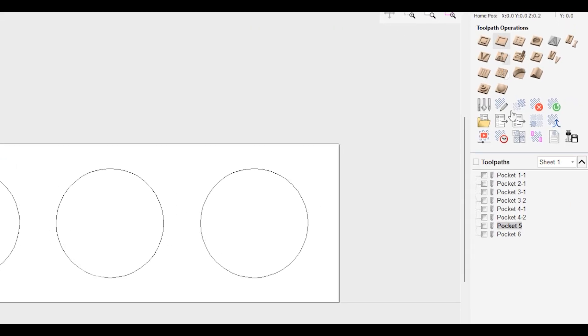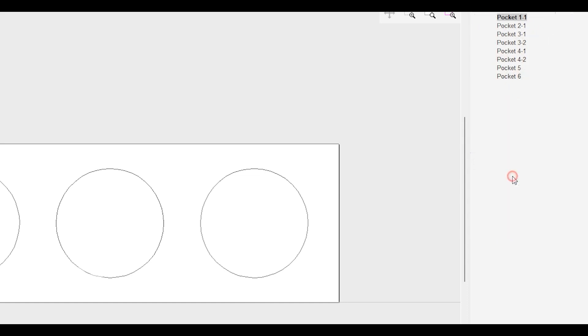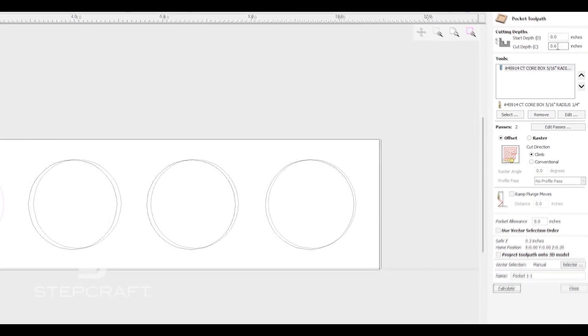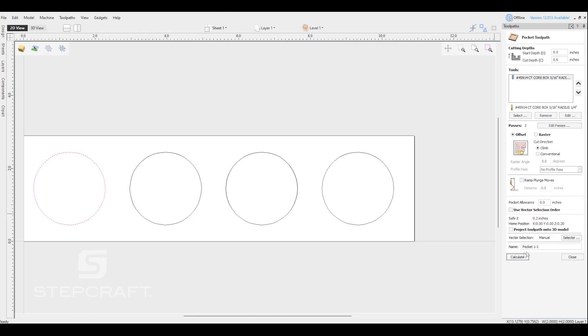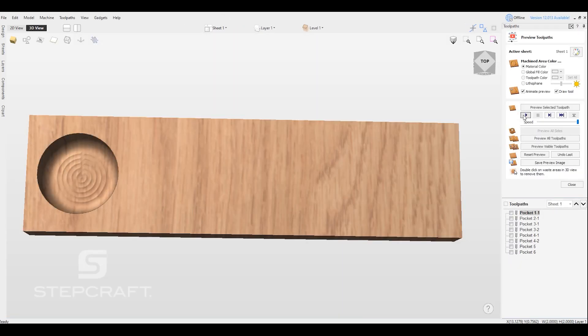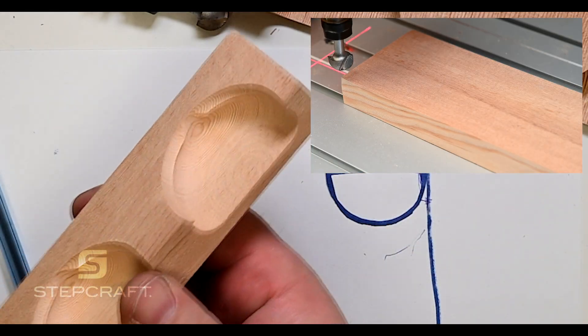Come over to our pocketing toolpath. We have our bit, we're going to cut down to 0.6 inches. When we calculate that out and run our simulation, we have a pocket with what looks to be a rough bottom. In the real world, we have the same thing.